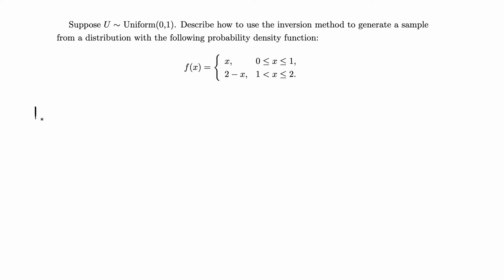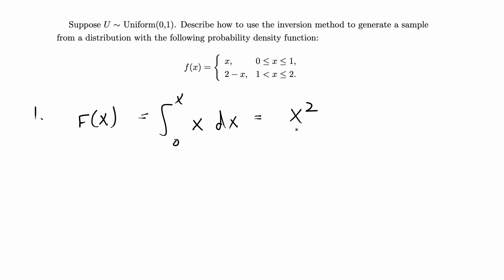The first step is to find the CDF from the PDF. We're given a PDF that has two steps, so I'm going to find the CDF F(x). For the first part, that's going to be the integral from 0 to x of x dx, which gives me x squared over 2, and this is for x from 0 to 1.